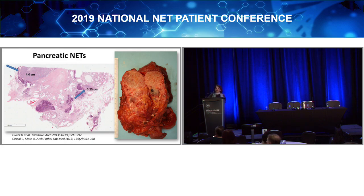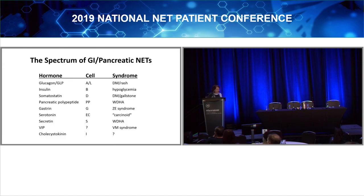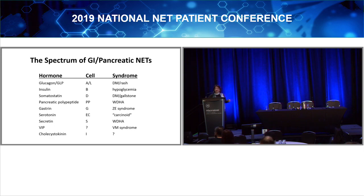The pancreas has four different cell types, and we should at least measure the four different hormones those tumors make — glucagon, insulin, somatostatin, and pancreatic polypeptide. We usually stain for these in good centers of excellence. But other hormones are also often made by neuroendocrine tumors because they're part of the same family as those in the gut. Each gives rise to a clinical syndrome: diabetes mellitus and a rash from a glucagonoma, hypoglycemia from insulin excess, or carcinoid syndrome from serotonin — all can be made by pancreatic endocrine tumors.